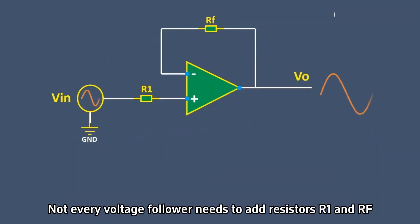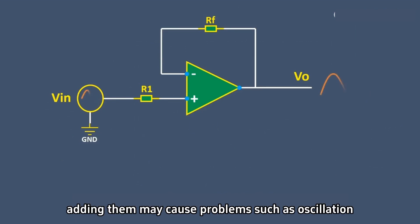Not every voltage follower needs to add resistors R1 and Rf. Sometimes, adding them may cause problems such as oscillation.